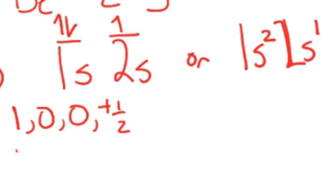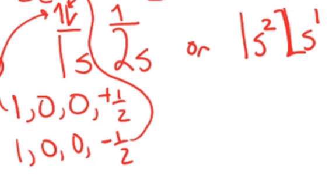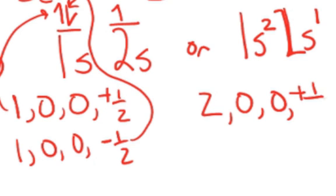And then for the other electron it could be 1, 0, 0, minus 1/2. So there's a set of four quantum numbers that could describe this electron, and then another set of four quantum numbers to describe that electron, and then we need a set of four quantum numbers to describe the one electron in the 2s, and that would be 2, 0, 0, and you could say plus or minus 1/2. It doesn't matter. You just have to pick one. So in this case I'll just say plus 1/2.